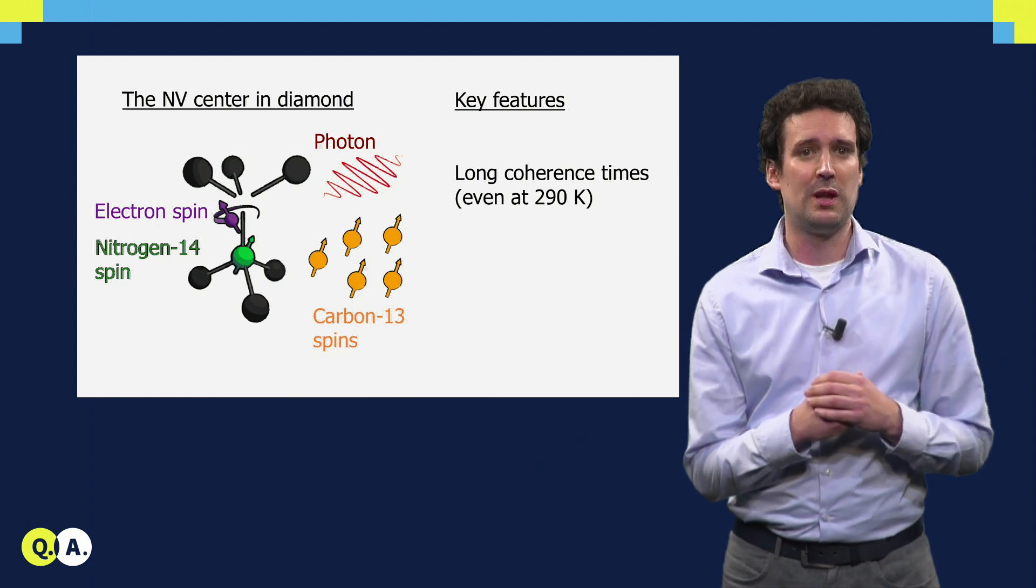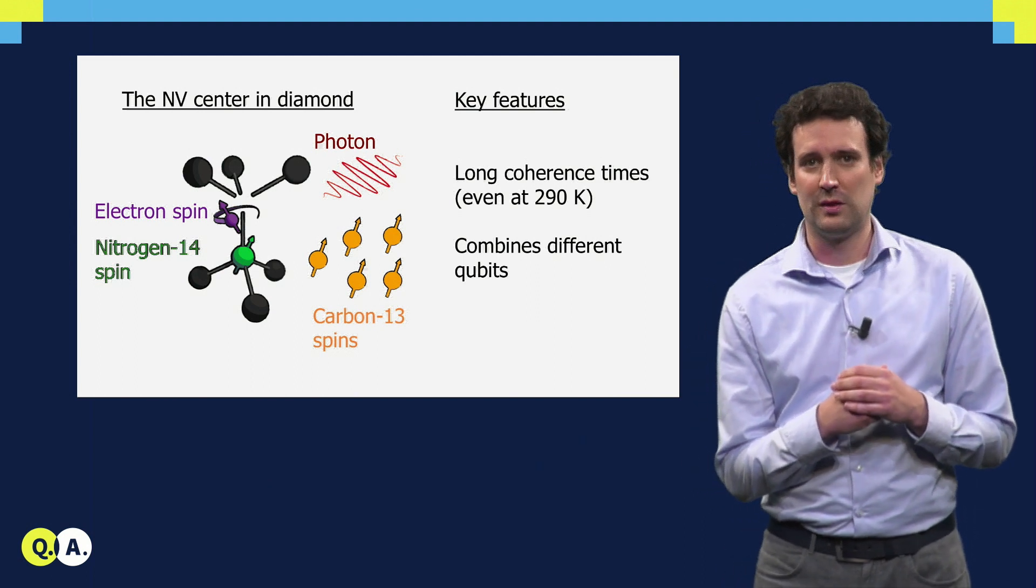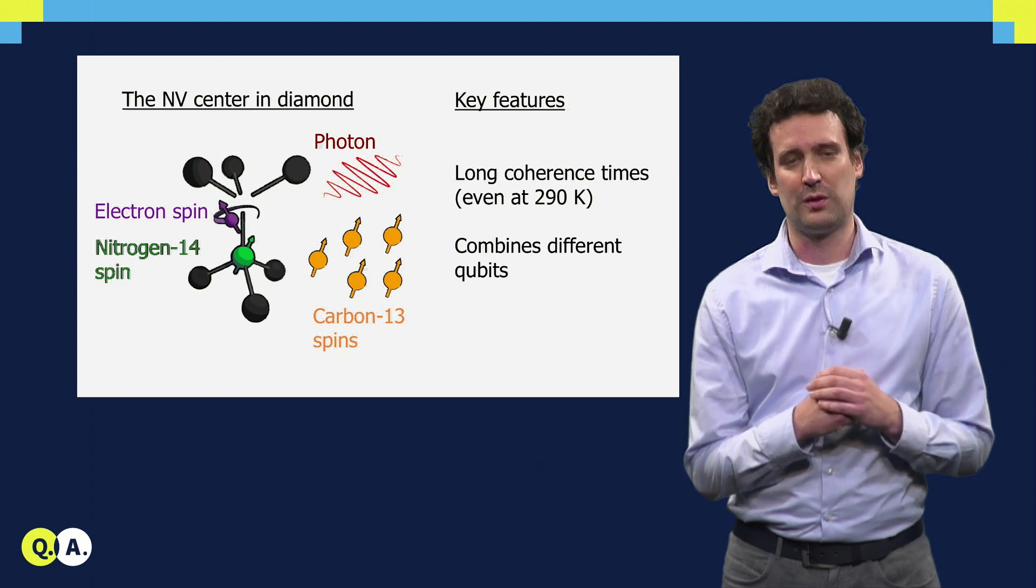Second, this electron spin is not the only qubit we have in the system. It couples to nuclear spins in the environment, which gives us extra qubits to store and process quantum information.